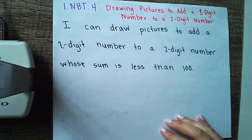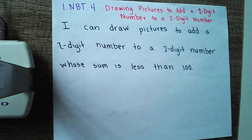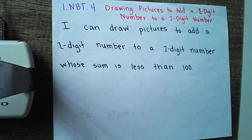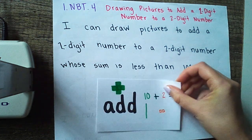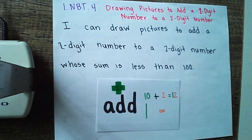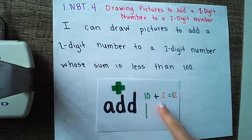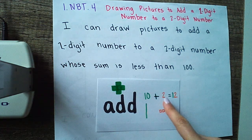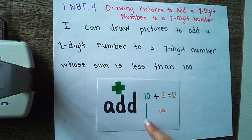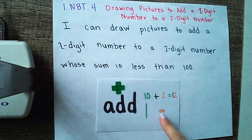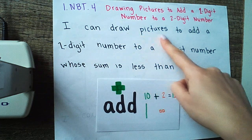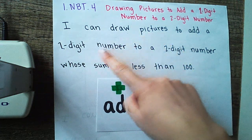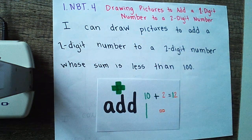We're going to see some vocabulary throughout this lesson that's going to help us better understand what we're learning. We know that when we add we're putting together. For example, if we were to add 10 plus 2 we would get 12. Notice that I drew a picture here to show what was happening. That's exactly what we're going to be doing today as we add our two digit numbers plus our two digit numbers.